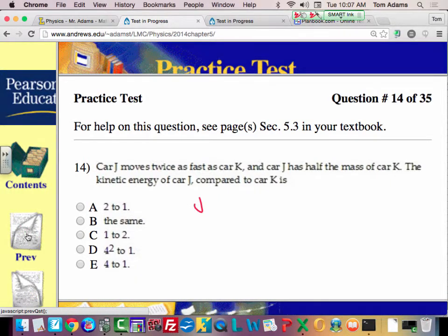Alright, so we're going to say J first. J has twice the velocity, so let's just say we'll list this up. J's velocity, VJ, is equal to VK but it's twice as fast as VK, so we'll say 2VK. Is that right?